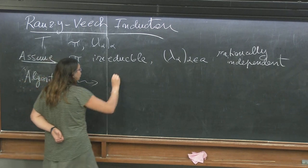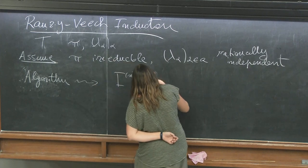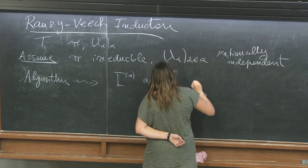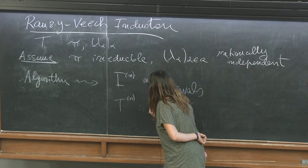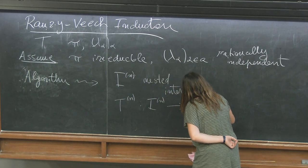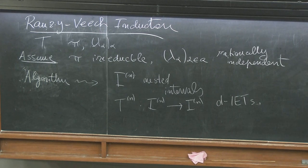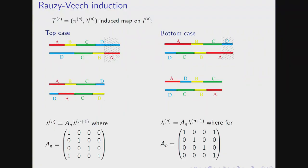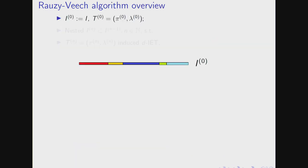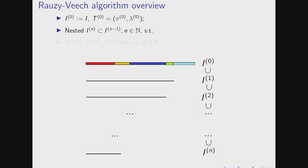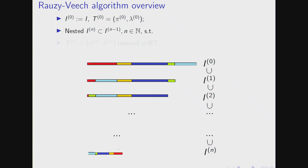This irrationality condition is our key assumption. Keane's theorem tells us that under this condition orbits will be dense — minimality. The algorithm gives me a sequence of nested shrinking intervals and a sequence of induced maps, which are all IETs. A step of the algorithm: you look at the shorter interval at the end, cut it, induce, and continue. So you build smaller and smaller intervals until they are nested and shrinking.